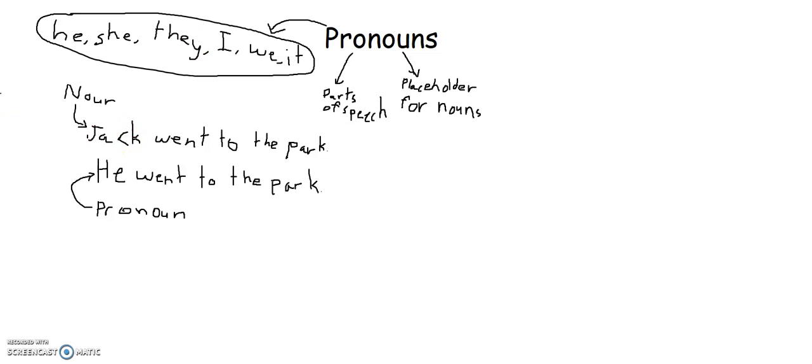So Jack went to the park, he went to the park. Same sentence. Jack is a noun. You can see now what I mean by placeholder. He is taking the place of Jack. They both sound right. He is just taking the place of Jack. Jack is he, he is Jack.